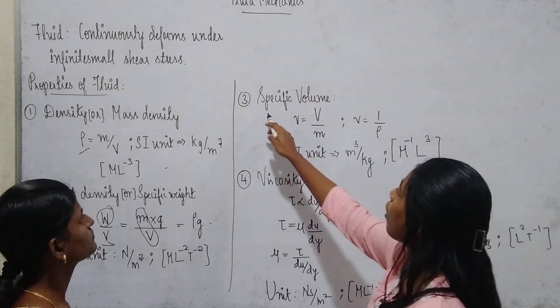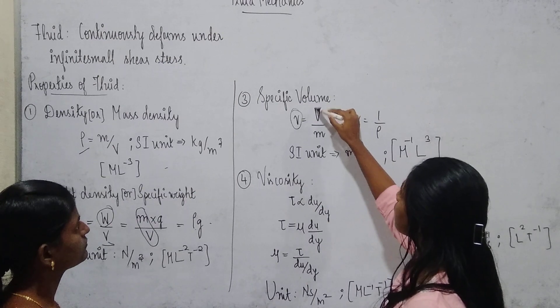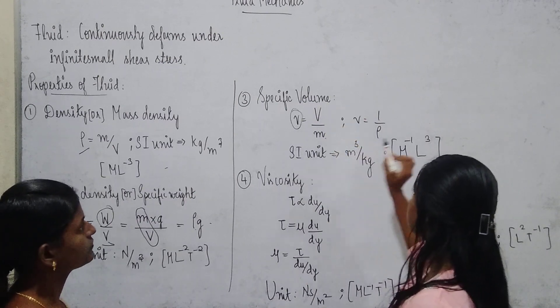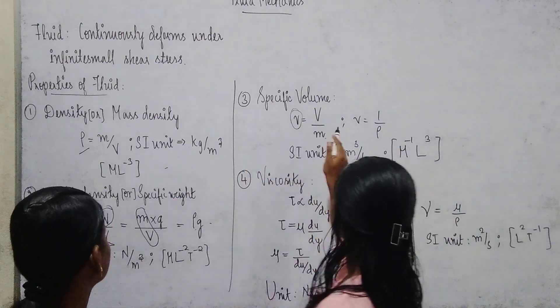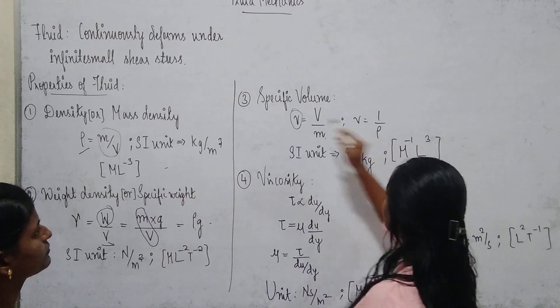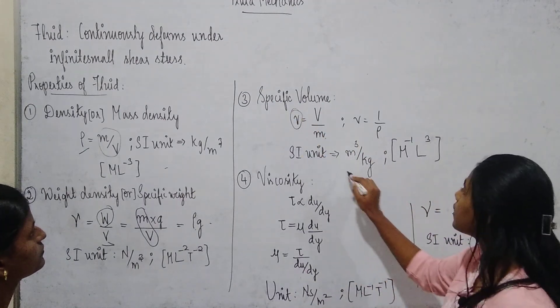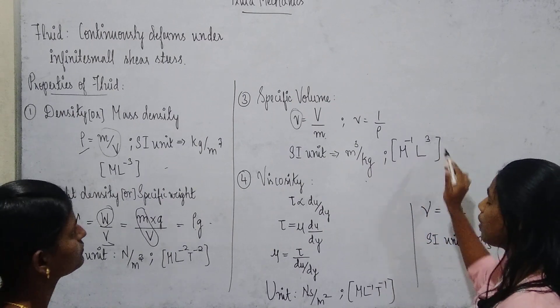Third one is specific volume. Specific volume is represented by small v. This is volume by mass. So specific volume is the reciprocal of density. We can see that density is mass by volume, and the reciprocal of density is volume by mass, that is specific volume. The SI unit is meter cube per kg and the dimension is M^-1 L^3.